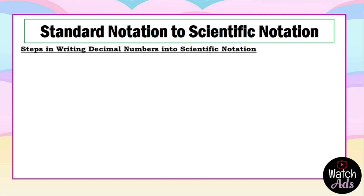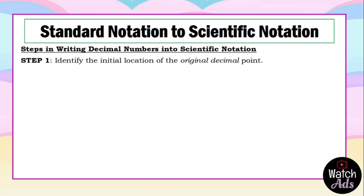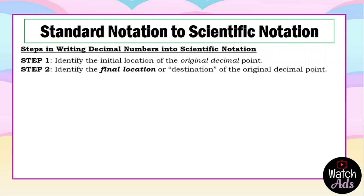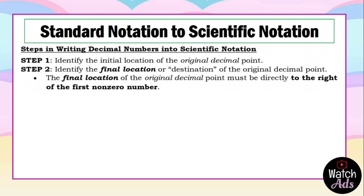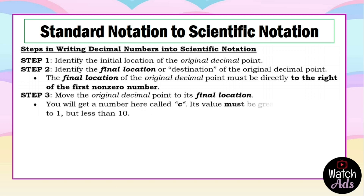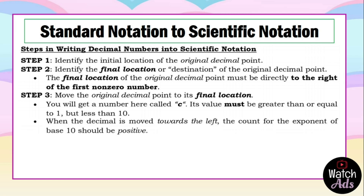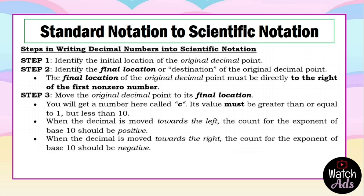Here are the steps in writing decimal numbers into scientific notation. Step 1: Identify the initial location of the original decimal point. Step 2: Identify the final location — the decimal point must be placed directly to the right of the first non-zero digit. Step 3: Move the original decimal point to its final location to get the coefficient c, whose value must be greater than or equal to 1 but less than 10. When the decimal is moved towards the left, the exponent of base 10 is positive; when moved towards the right, the exponent is negative.